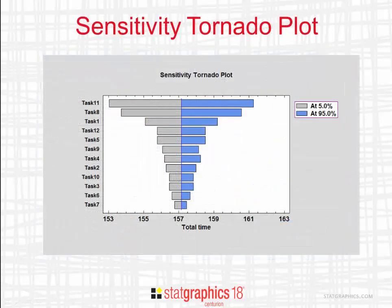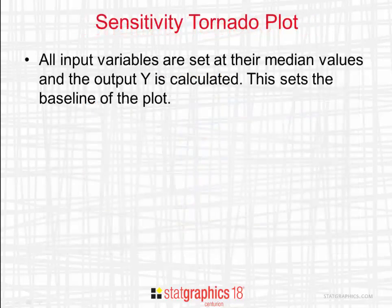New to StatGraphics 18 is the sensitivity tornado plot. This plot is designed to show me which of my input variables have the biggest impact on the output. You'll notice that my output variable, total time, is along the horizontal axis. Along the vertical axis you'll see the 12 tasks, shown in decreasing order of importance — where importance is how much they affect the output. To construct a sensitivity tornado plot, we begin by setting all of the input variables at their median values, then calculate the output. This output defines the baseline of the plot.